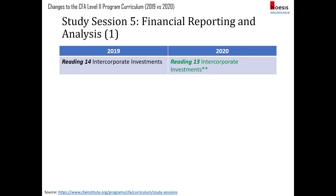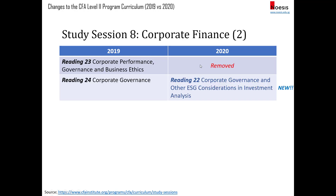For FRA, in intercorporate investments they've removed the part on IAS 39. Now for investments in financial assets it's all based on IFRS 9 with respect to IFRS.